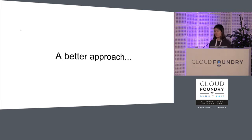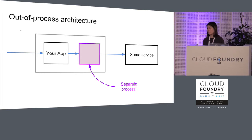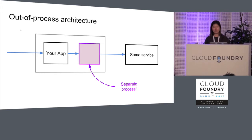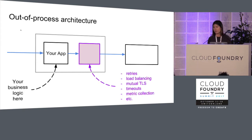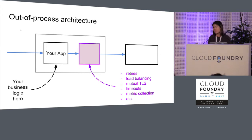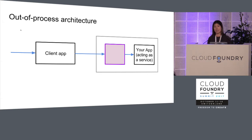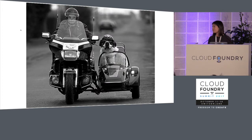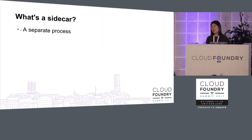Sidecars are a better approach — an out-of-process architecture. Your application can focus on business logic while a separate process running alongside provides all the features we want, like retries and load balancing. Importantly, this separate process can be used both for traffic your application sends out and for traffic coming in. That purple box — the separate process — is what we call a sidecar.